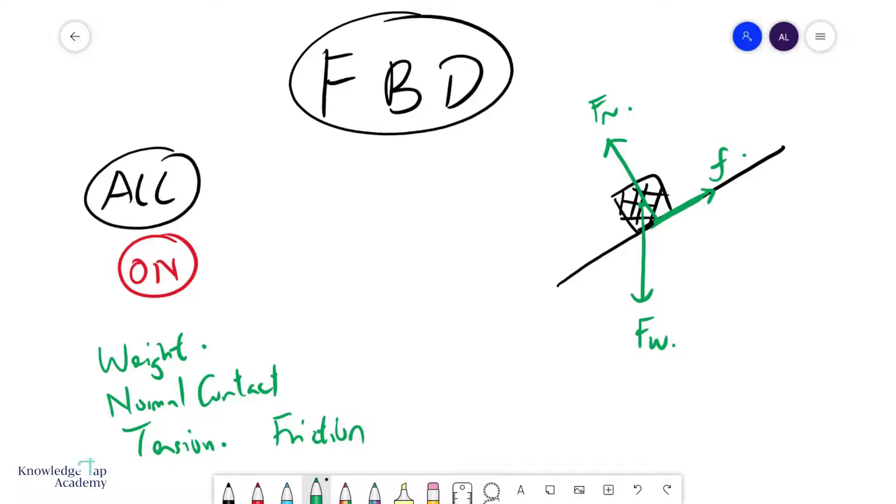Now, of course, the other thing that we have to be very careful of when we draw FBDs is that the lengths of these arrows need to be reflective of the relative magnitudes of the force.